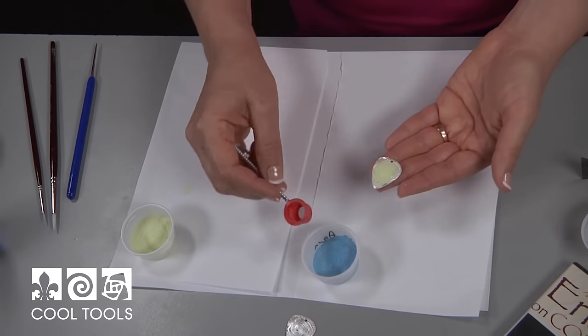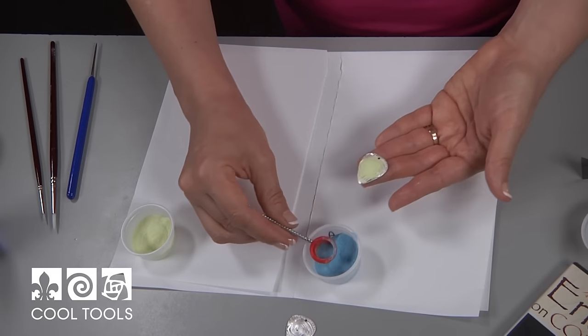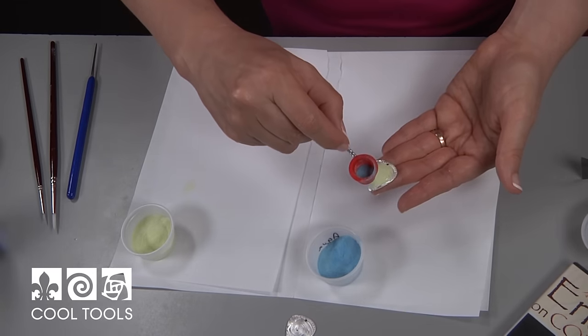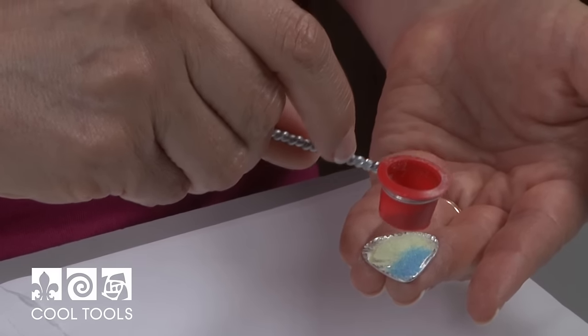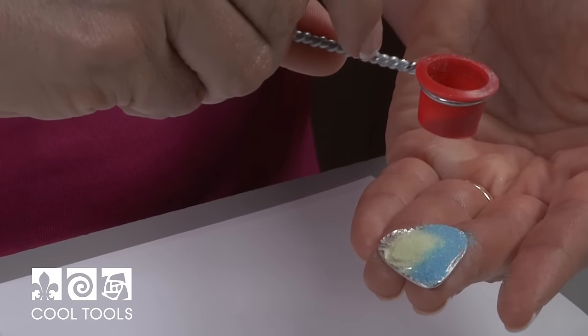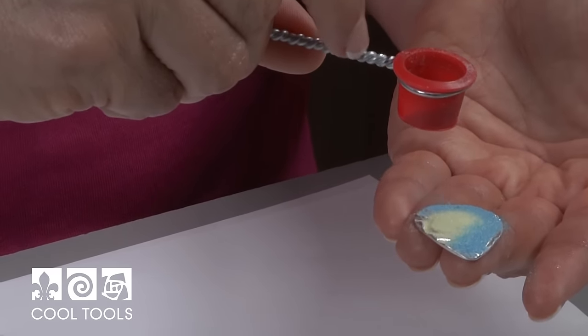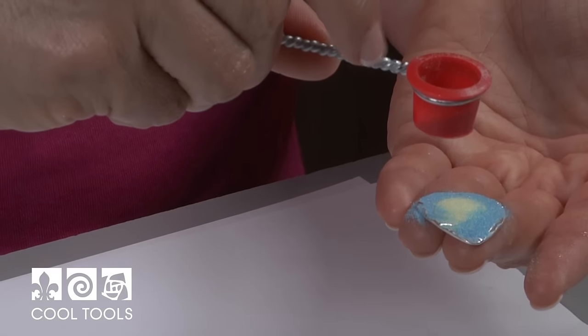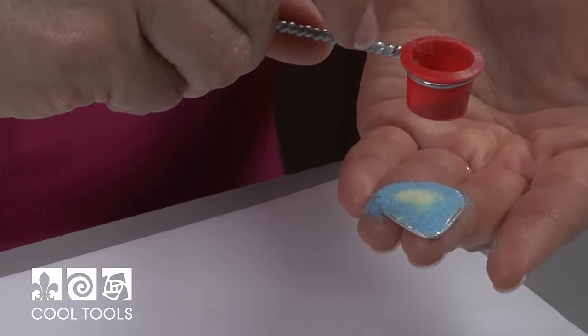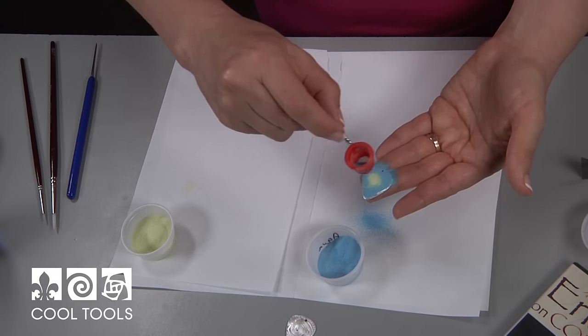Now I'm going to come over here to the blue. I'm going to do the blue around the edges and I'm going to overlap them. That's going to give me a little shading. Take care not to block the hole.